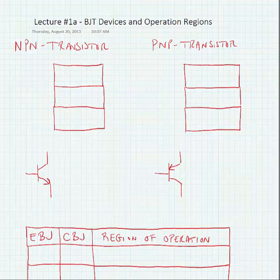Okay, in this lecture we're going to look at BJT devices, or bipolar junction transistors, and the regions of operation.